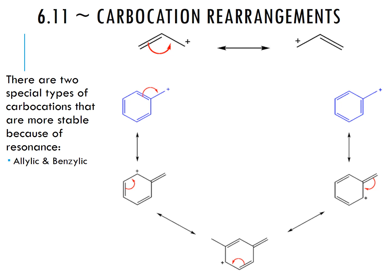Here are extra pictures explaining allylic and benzylic stability. An allylic carbocation has one extra resonance contributor — resonance helps make things more stable. A benzylic carbocation, attached to a benzene ring, has five total resonance contributors, making it very, very stable.